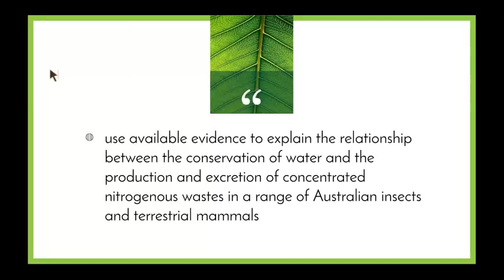Now we're going to look at the next dot point, which examines evidence to explain the relationship between the conservation of water and the production and excretion of concentrated nitrogenous wastes in a range of Australian insects and terrestrial mammals. The examples you look at in your research must be specifically Australian insects and Australian terrestrial mammals.